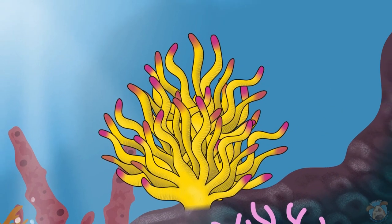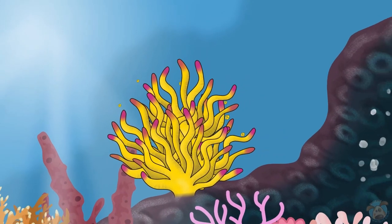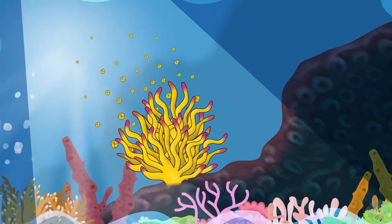Coral can also reproduce by releasing polyps into the water which drift off and start new reefs elsewhere.